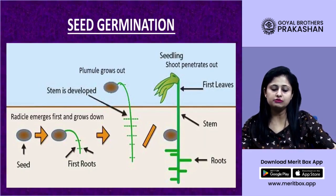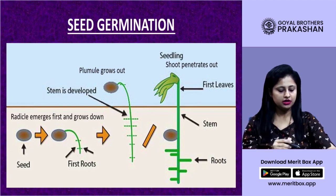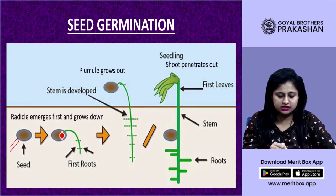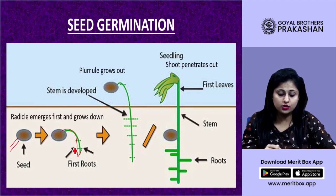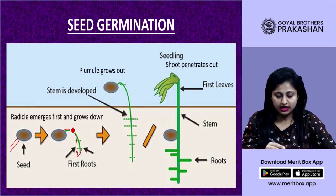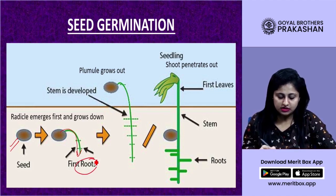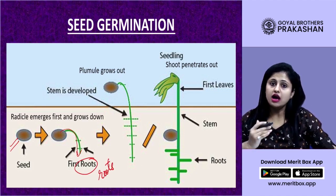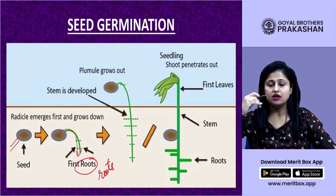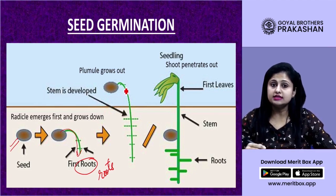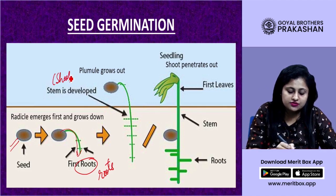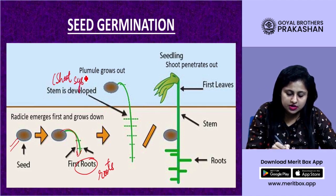This diagram shows seed germination. The radicle emerges first and grows downward to form the roots. The plumule then grows upward above the ground, from which the shoot system — stem and leaves — develops.